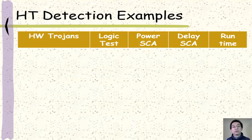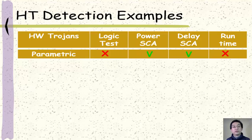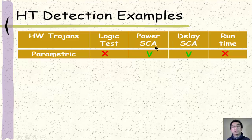Finally, let's see a few examples about hardware trojan detection. First, consider parametric hardware trojans. These are trojans that do not change the functionality of the system. Therefore, logical test and runtime monitoring may not be able to detect them. However, since they change the physical parameters of the circuits — in particular the wires, transistors, or logic gates — this will leave traces in the power or delay side channel. So side channel analysis based detection can find parametric hardware trojans.